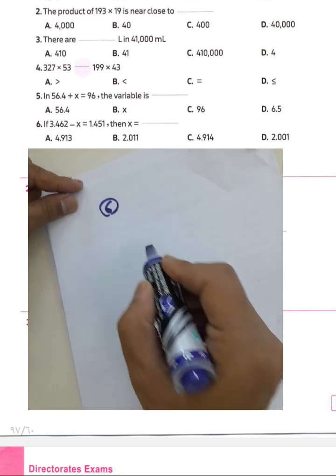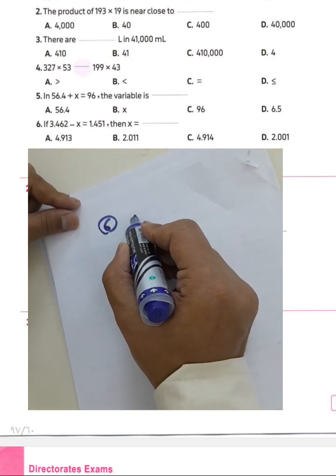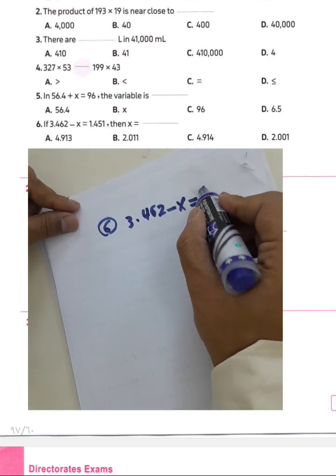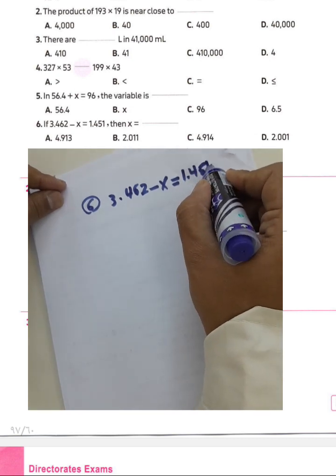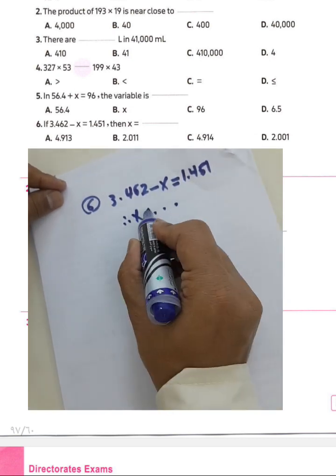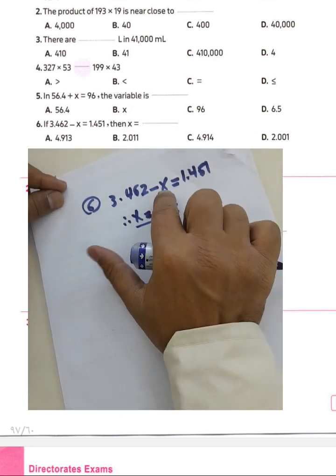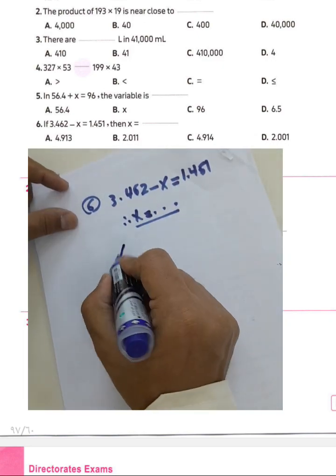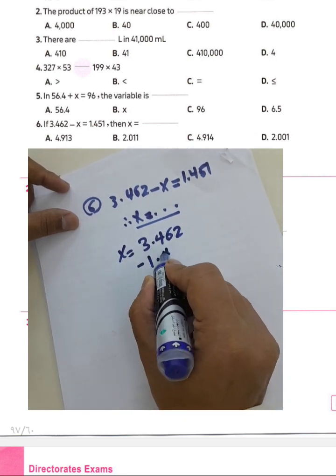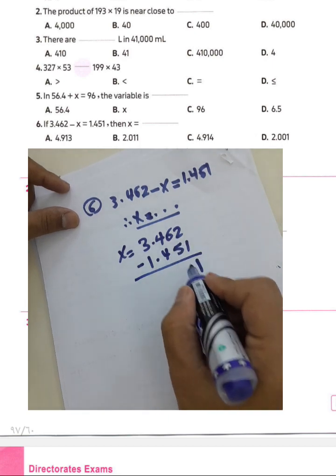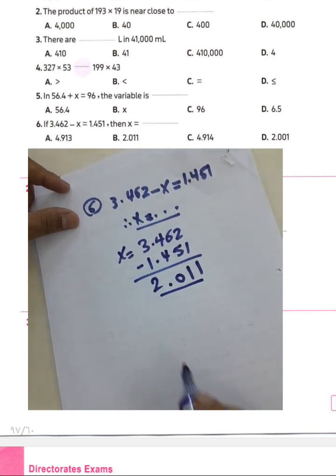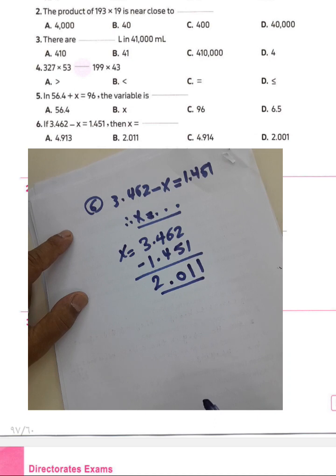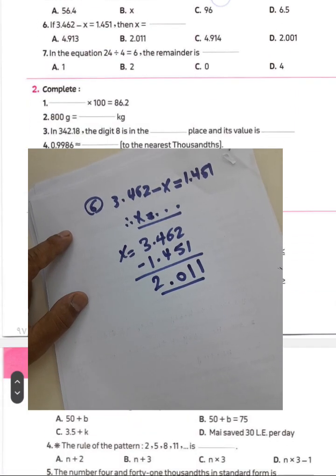Question six: 3.462 subtract by x equals 1.451. To find the subtrahend, find the difference between the two numbers. So x equals 3.462 minus 1.451: 2 minus 1 equals 1, 6 minus 5 equals 1, 4 minus 4 equals 0, 3 minus 1 equals 2 — the result is 2.011. Choose letter B.